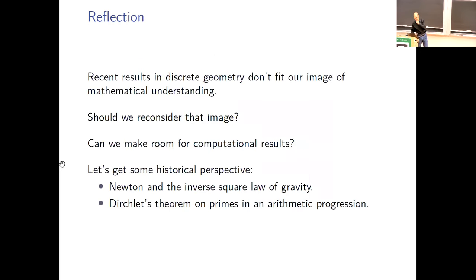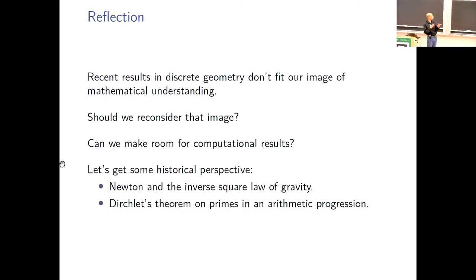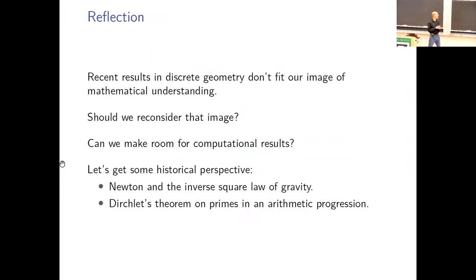The results I discussed don't neatly fit our image of conceptual mathematical understanding — they're not conceptual results. The questions the essay raises are: should we reconsider that image? Is there a way to think about mathematical understanding that makes results like these more part of the picture of what it means to understand mathematics? In particular, can we find ways of making room for computational results? To that end, let's get a historical perspective by discussing two older results — one in Newton and one in Dirichlet.